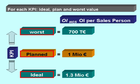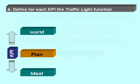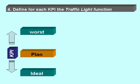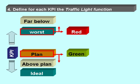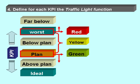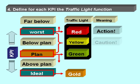As we want to visualize the status of the company, we define for each KPI a traffic light function. For the planned figure and actual figures above the plan, we introduce a green color code. For figures below the worst case figure, we introduce a red color code. Between the planned figure and the worst case figure, we introduce a yellow color code. Once the KPI goes into red, we need to take action; yellow means caution; green means we are in plan or above plan.